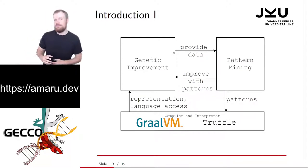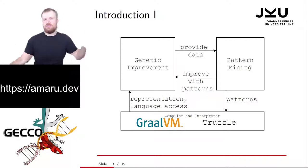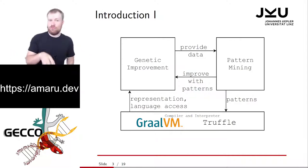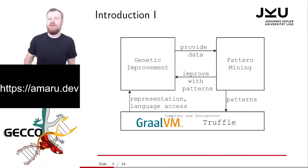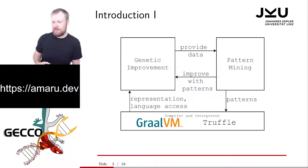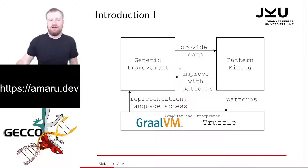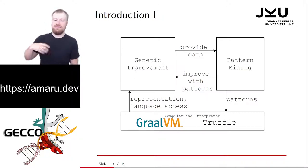As an introduction, the Amaro framework is basically split into two parts: the genetic improvement part on the left, and the pattern mining part on the right. Genetic improvement provides the data that we use with pattern mining, and then we use the identified patterns to improve the genetic improvement process. As a base, we have the Graal compiler and the Truffle interpreter. The Graal compiler is part of the OpenJDK, so it's available in Java. This gives us pretty low-level access to the language, allowing us to access the stack and the heap and use this information in genetic improvement.